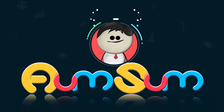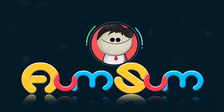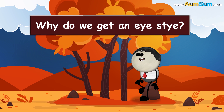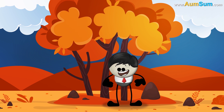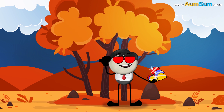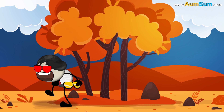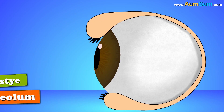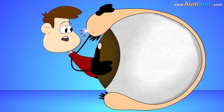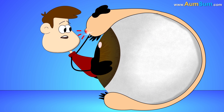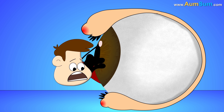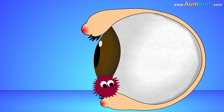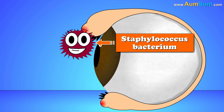It's AumSum Time. Why do we get an eye sty? Eye sty or Hordeolum is a painful pimple-like bump near our eyelids. It is caused due to Staphylococcus bacterium which lives harmlessly on our skin.